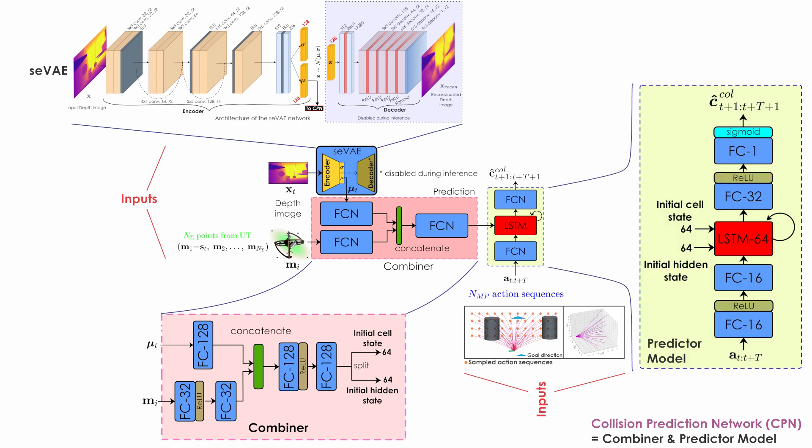To predict a sequence of collision labels from a sequence of input actions, given a compressed representation of the depth image and the current partial state of the robot as the initial state, we use an LSTM, a type of recurrent neural network, at the core of the prediction network.